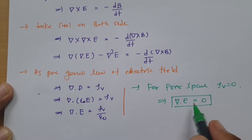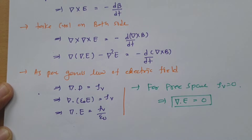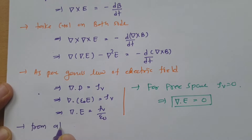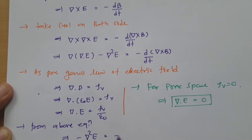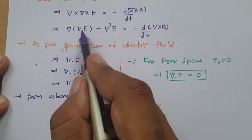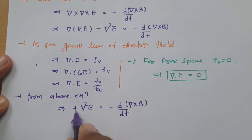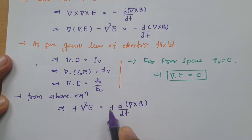Now, placing del·E equals zero into the equation, we can say minus del squared E equals minus d/dt of del cross B. As del·E is zero, the del·(del E) term vanishes, leaving minus del squared E. With the two negatives, this becomes positive del squared E.